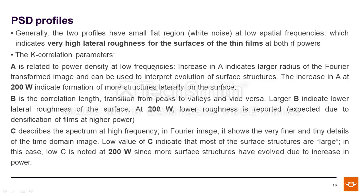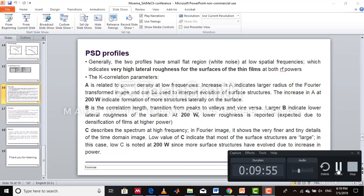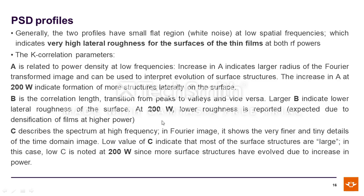The k-correlation model shows that A, related to power density at low frequency, increases at 200 watts, indicating the formation of more structures laterally on the surface. B is the correlation length — the transition from peaks to valleys and vice versa. Larger values of B indicate lower lateral roughness, meaning at 200 watts lower roughness is expected due to densification of the film at higher power. C describes the spectrum at high frequency in the Fourier image, showing the finer and tiny details. Low values of C indicate that most surface structures are large; low C is noted at 200 watts since more surfaces have evolved at increasing power.